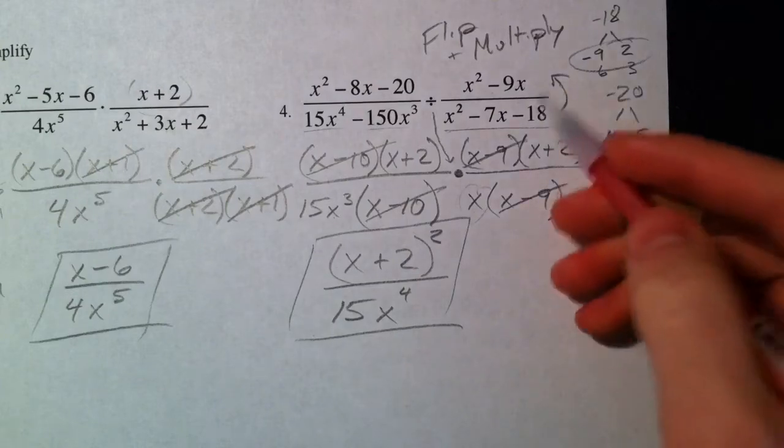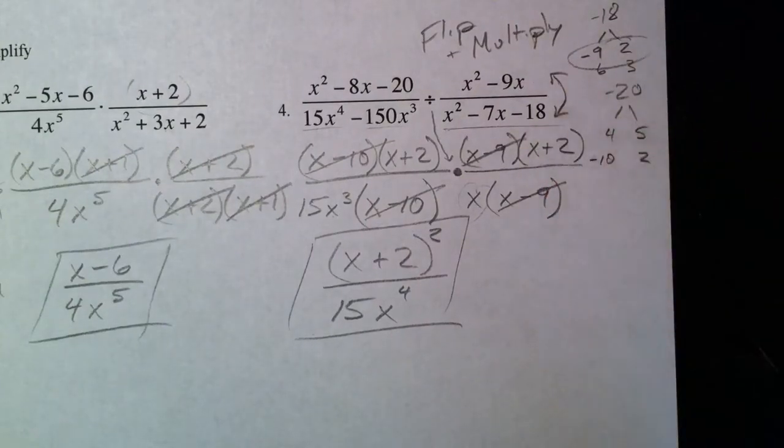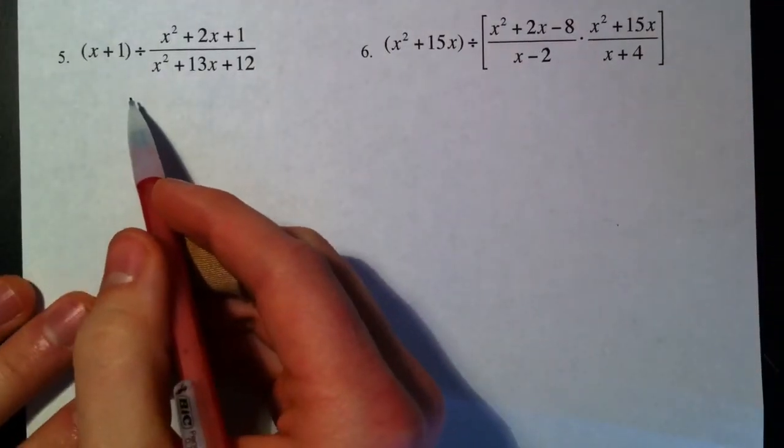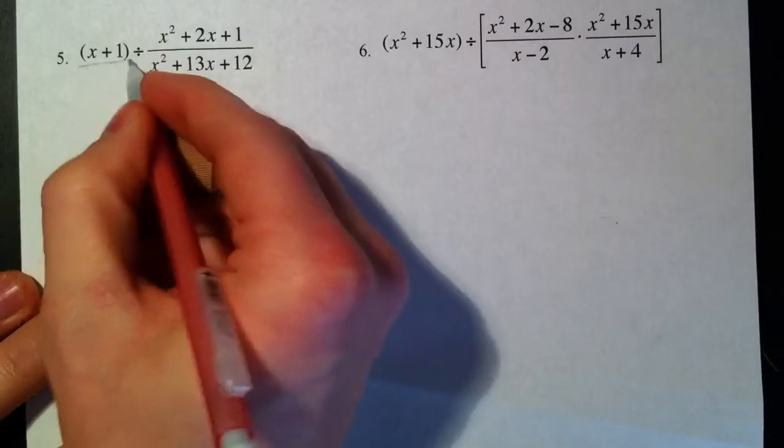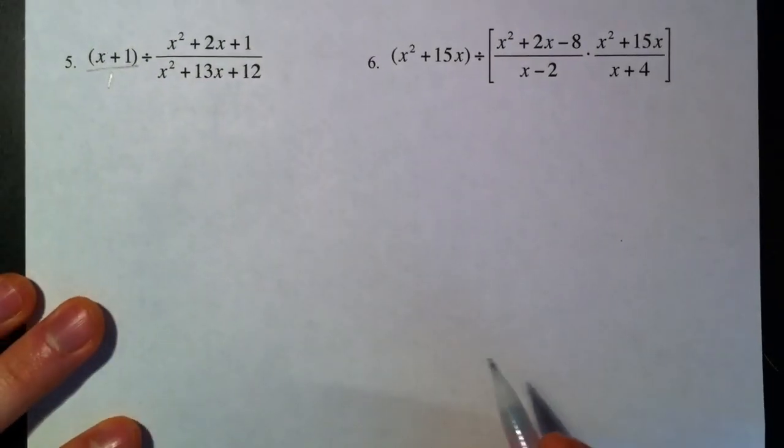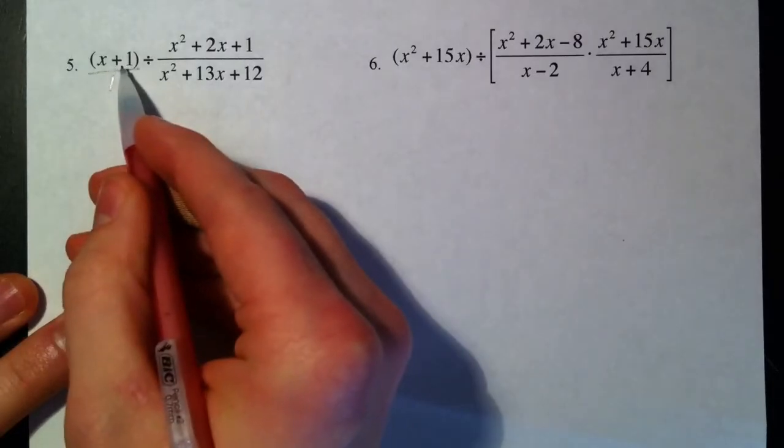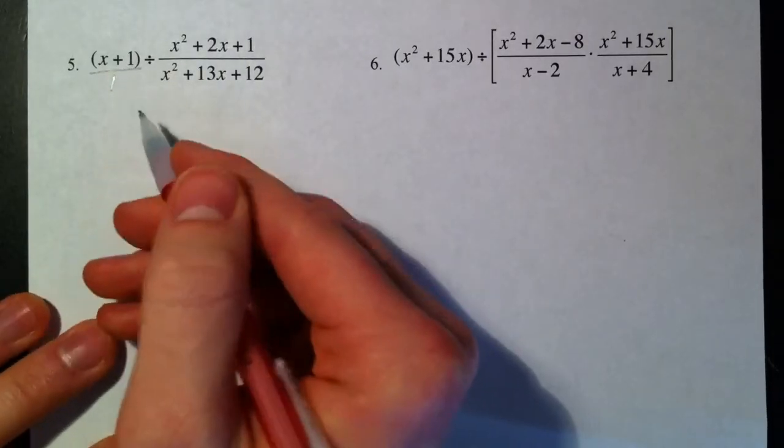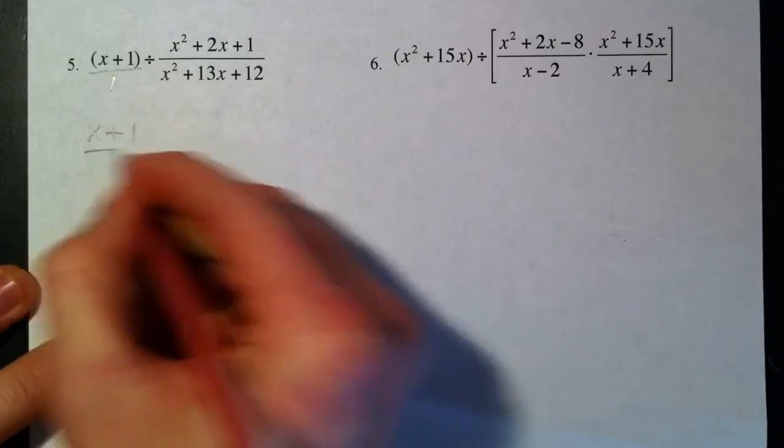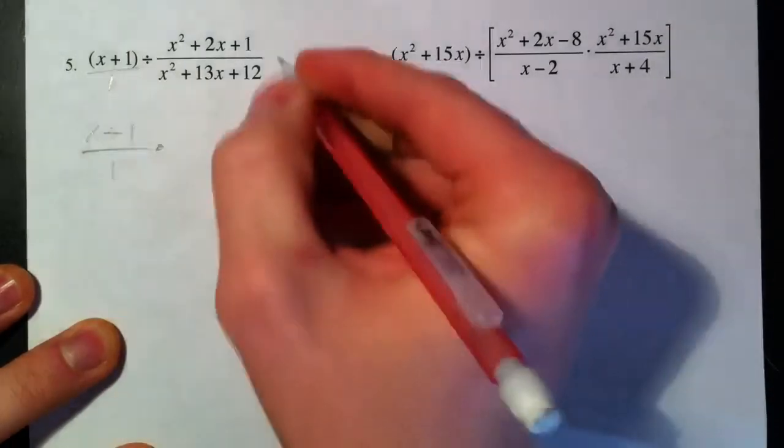All right, factor, factor, factor, factor. Flip and multiply when you're dividing. So sometimes what trips us up is if we don't have a full fraction, and really it's as easy as just stick a 1 under there so that you can see what matches up with what, because this X plus 1 is really on the top in terms of where it goes. So X plus 1, I'm going to do the same thing again where I flip this.